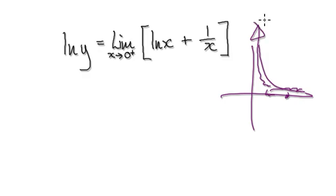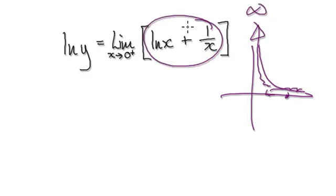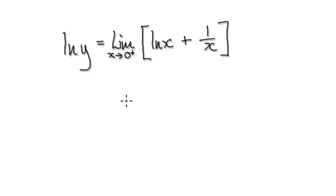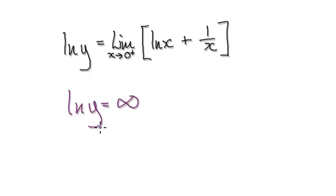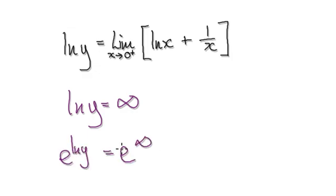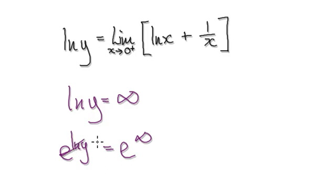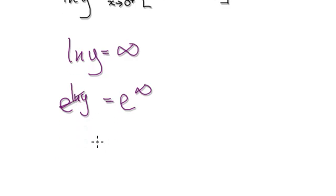Since 1 over x heads towards positive infinity as x tends to zero from the right, this whole expression heads towards positive infinity. So you've got natural log of y heading to positive infinity, and then exponentiating both sides — e to both sides — that cancels the natural log, giving you y heading towards positive infinity.